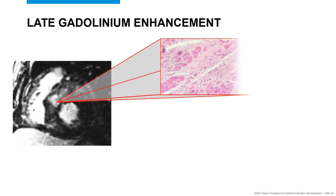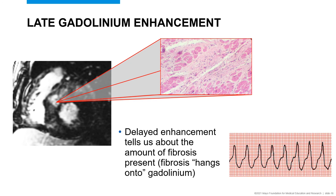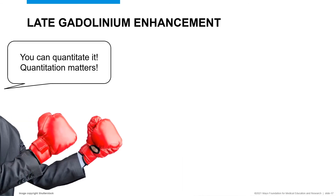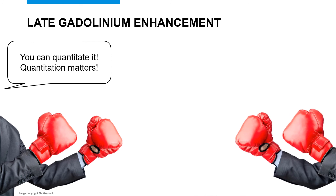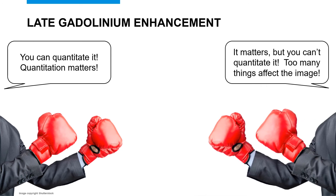Late gadolinium enhancement continues to grow in importance in HCM clinical management. Late gadolinium enhancement gives us a window into myocardial substrate to understand the degree of fibrosis burden. The greater the fibrosis, the greater the arrhythmogenic potential, because this fibrosis serves as a nidus for ventricular arrhythmias.